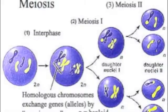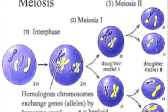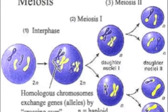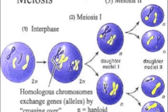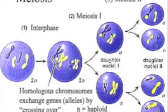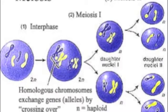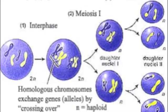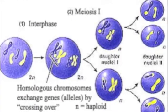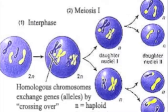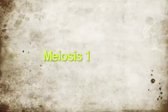Meiosis. Unlike mitosis, meiosis is separated into two stages: meiosis I and meiosis II. Meiosis is the process that makes sexual reproduction possible in organisms and allows for genetic diversity. In animals, the germ cells undergo meiosis to produce gametes. Each cell starts with a diploid cell number and eventually results in a haploid.